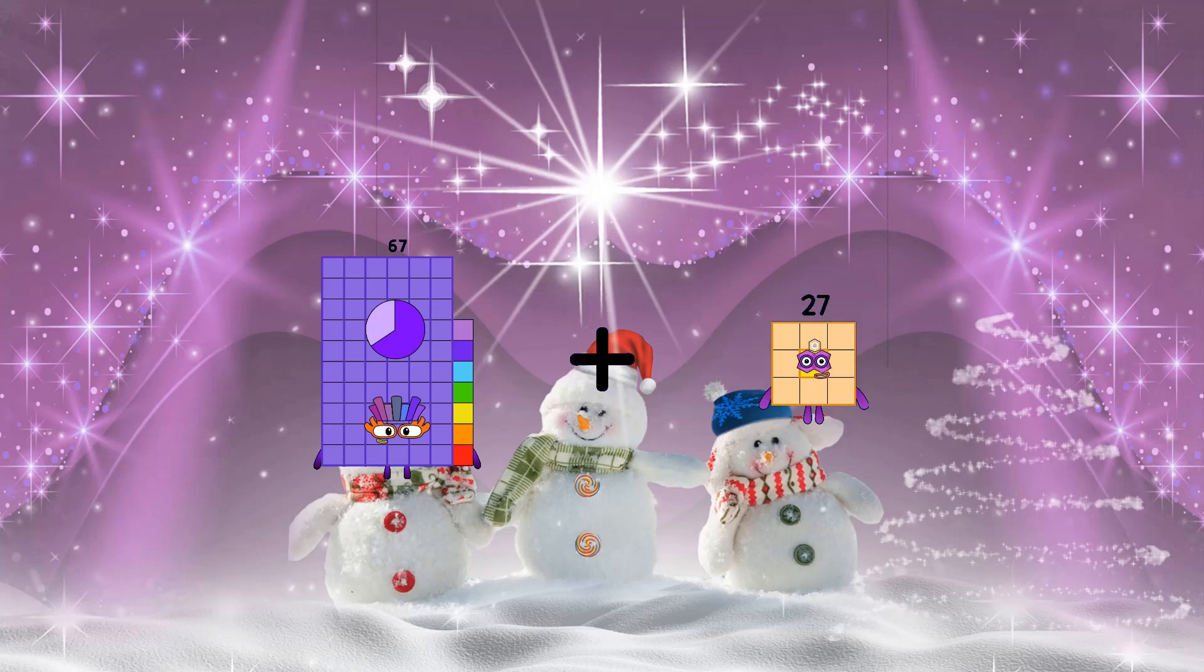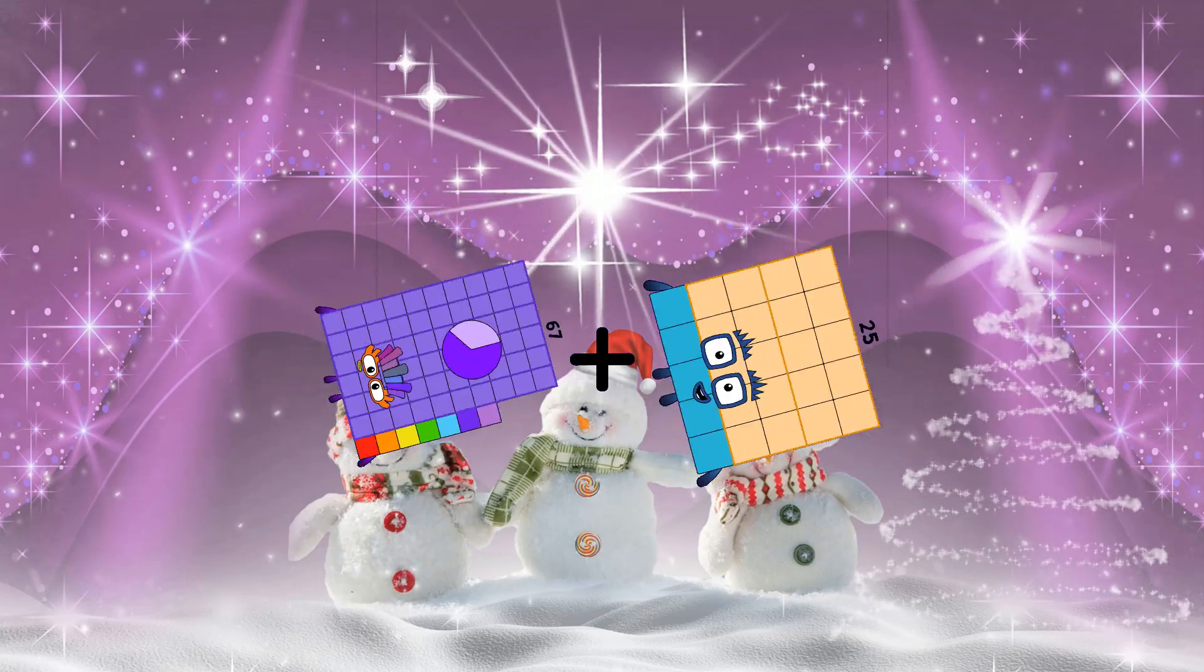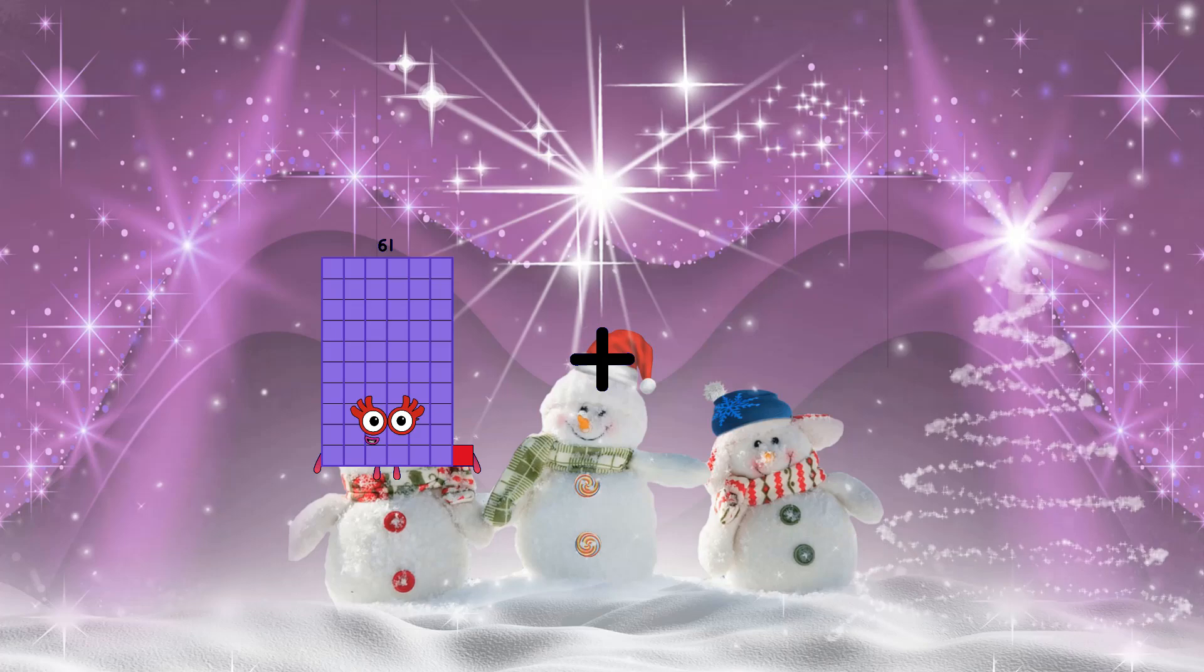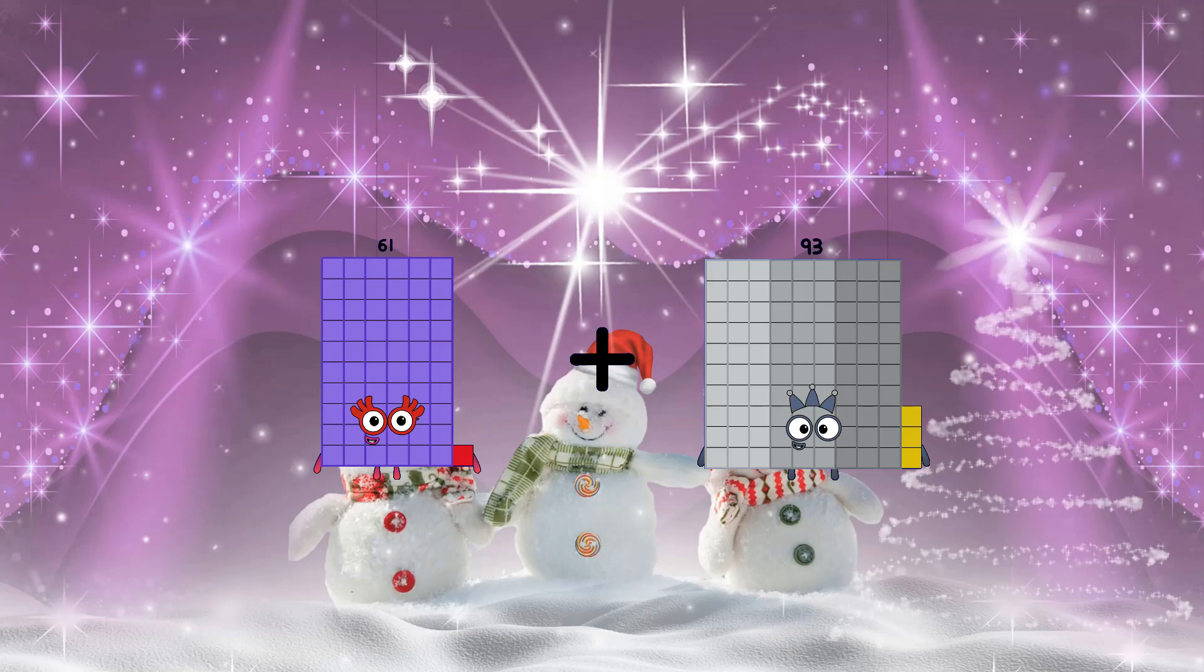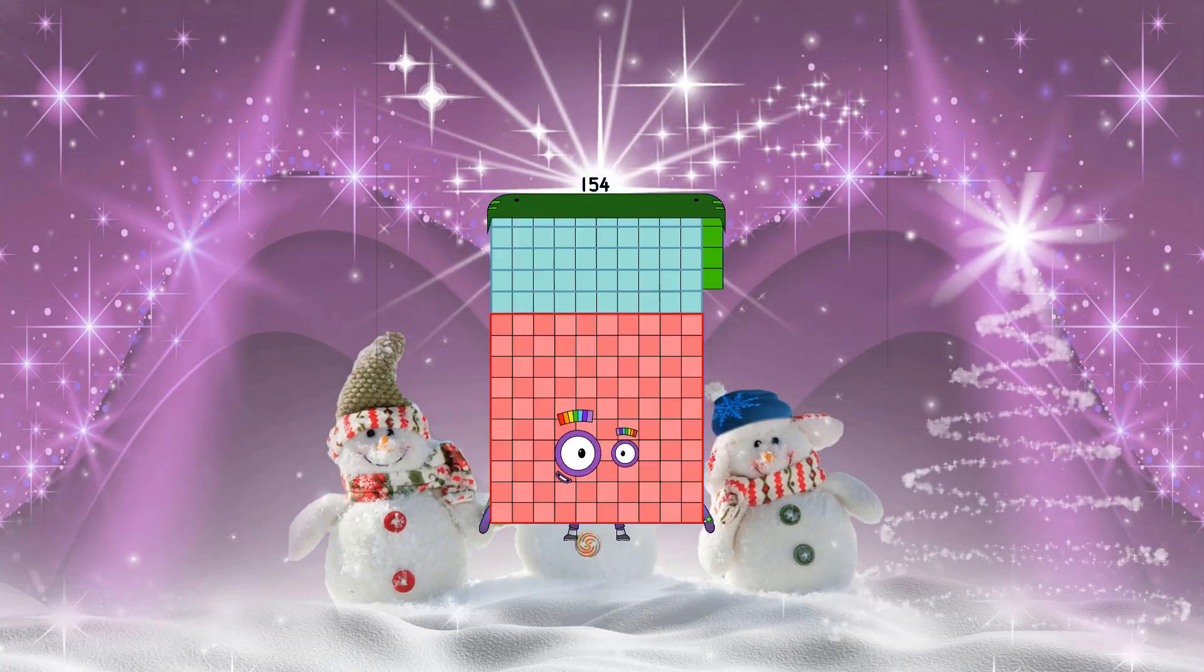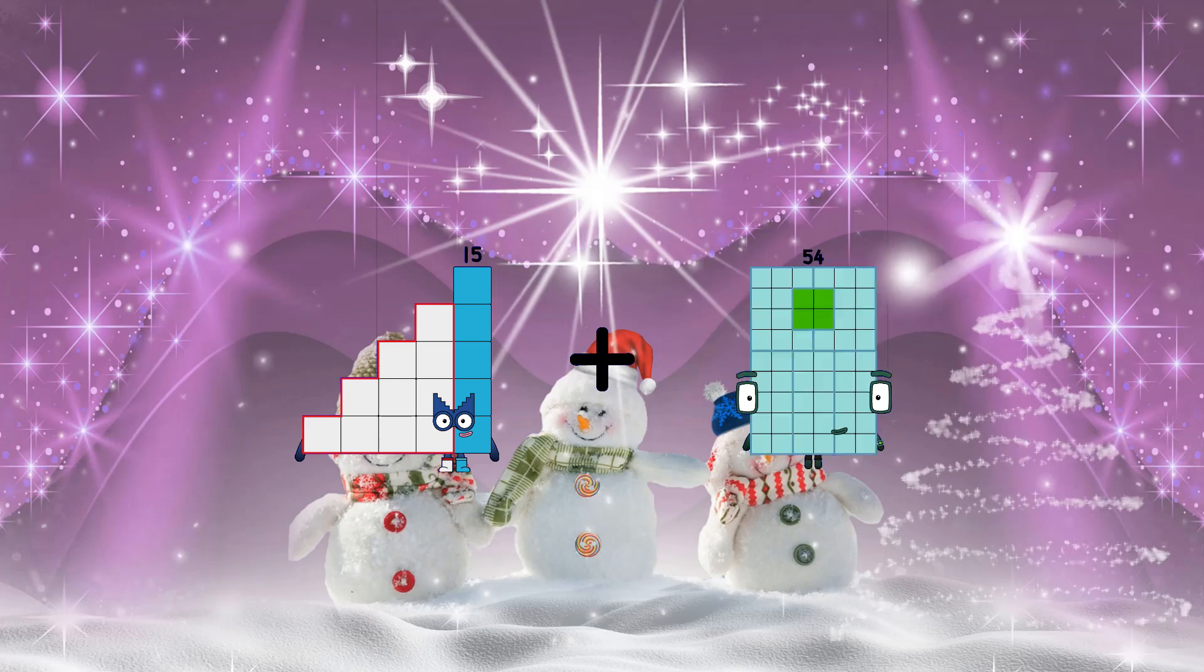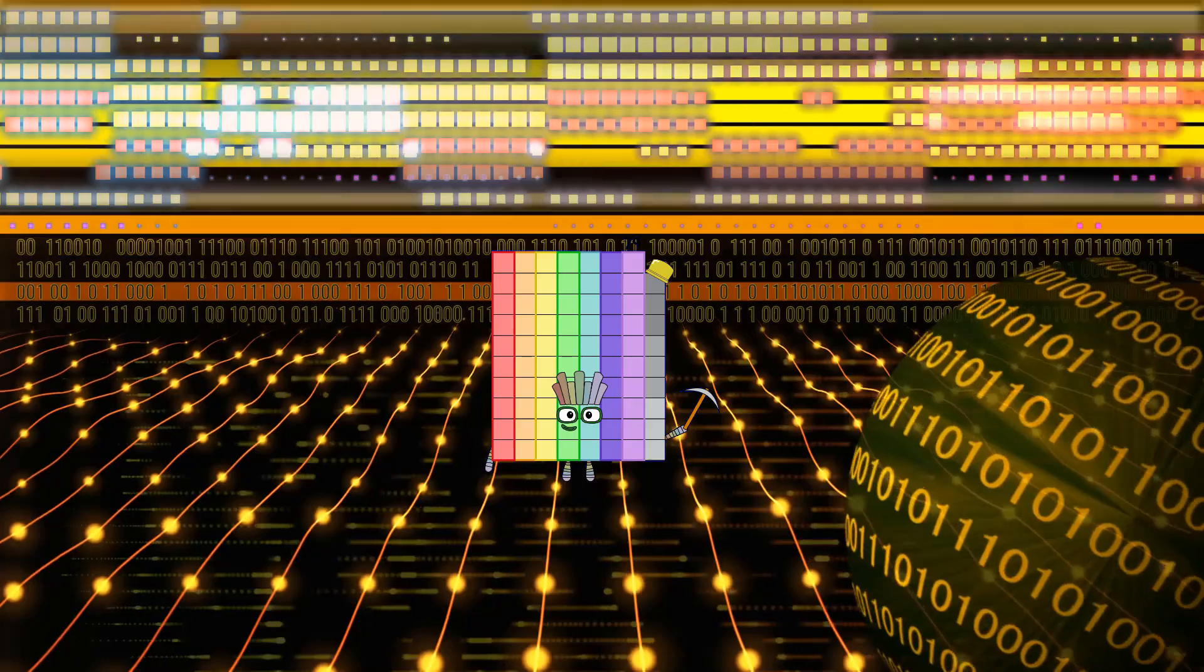67 plus 25 equals 92. 61 plus 93 equals 154. 15 plus 64 equals 79.